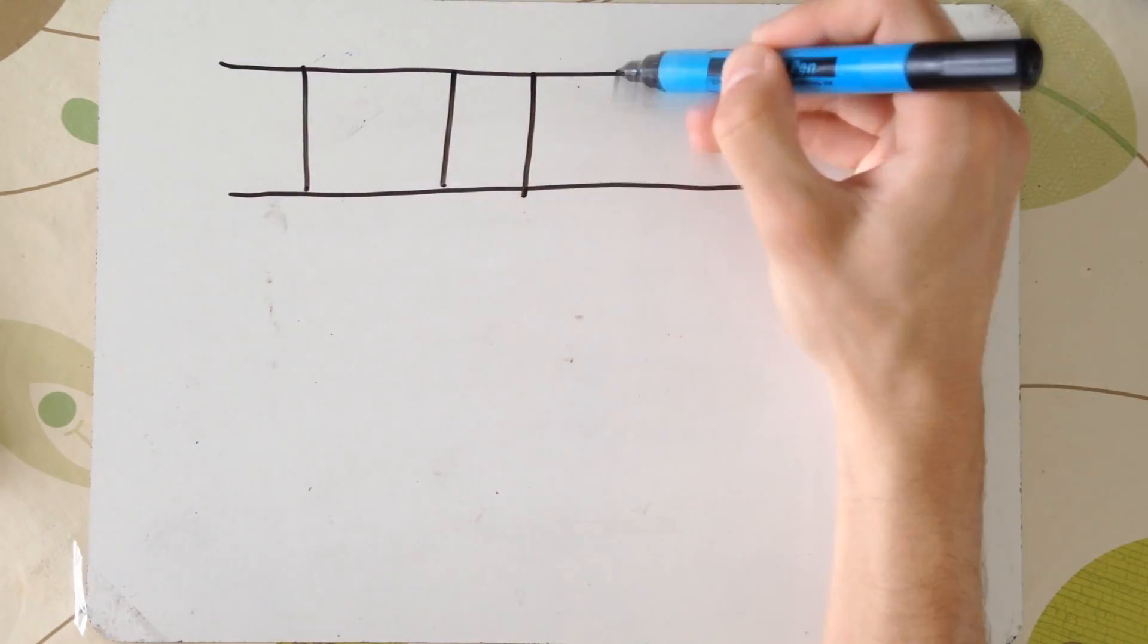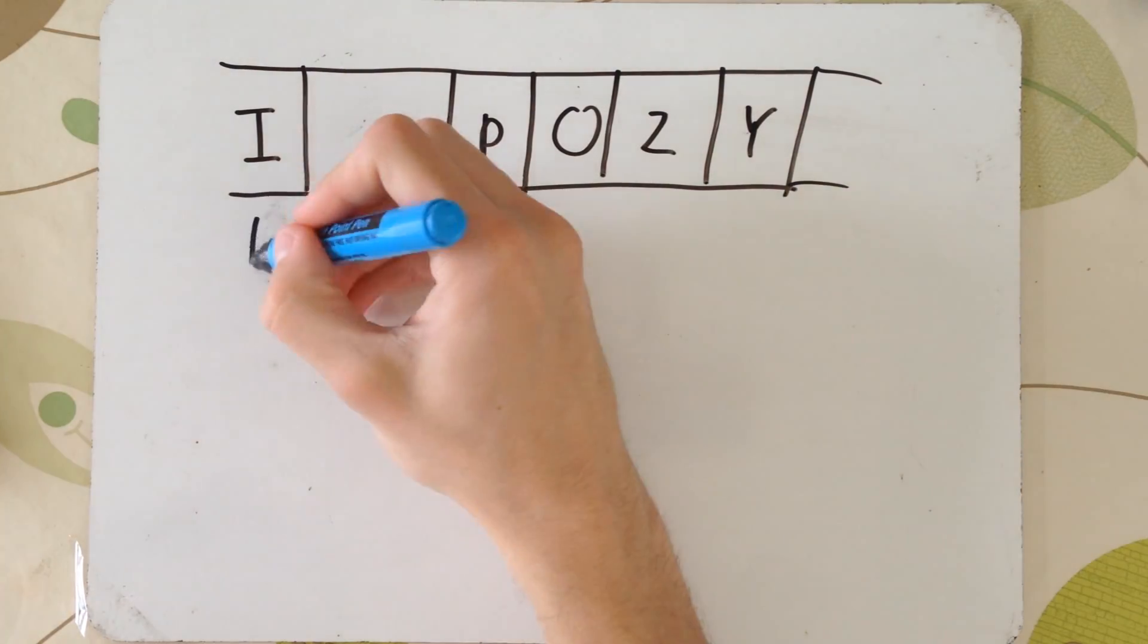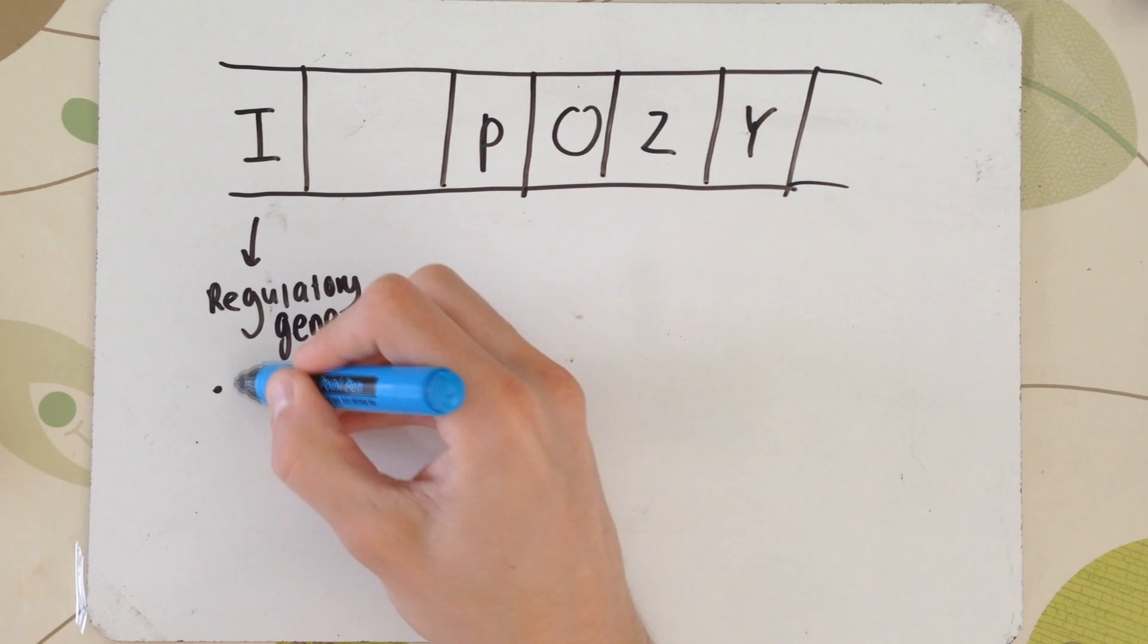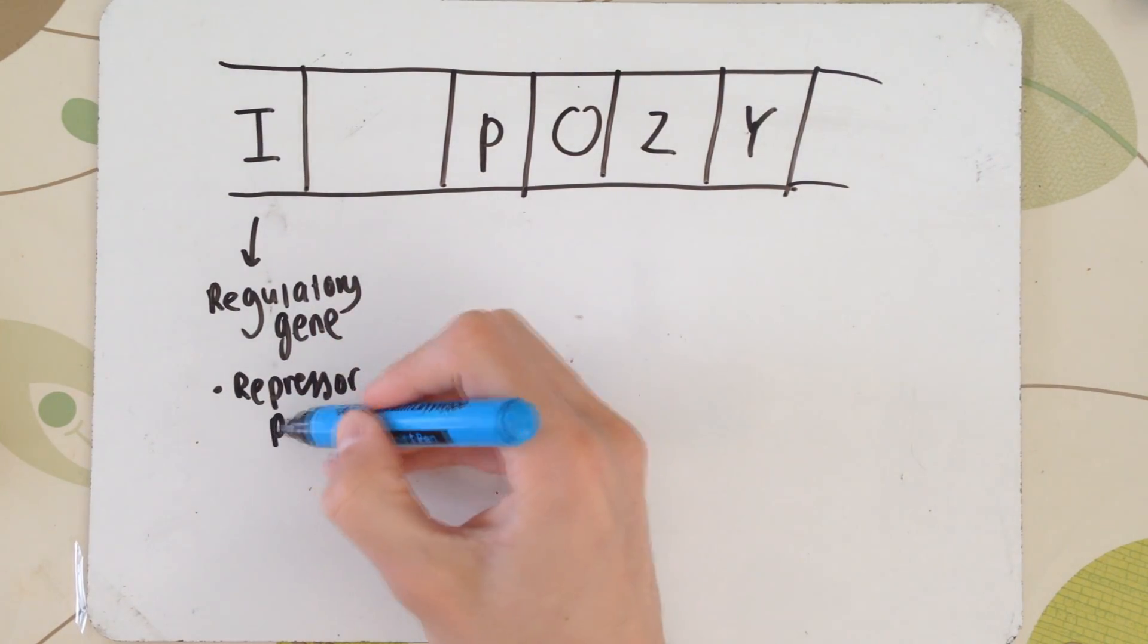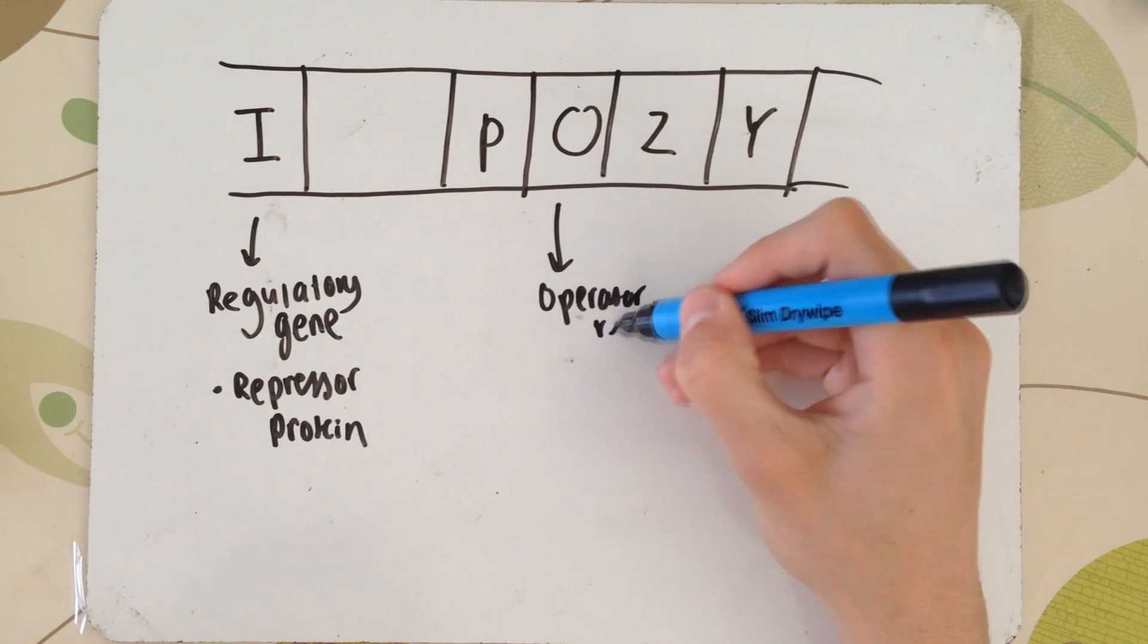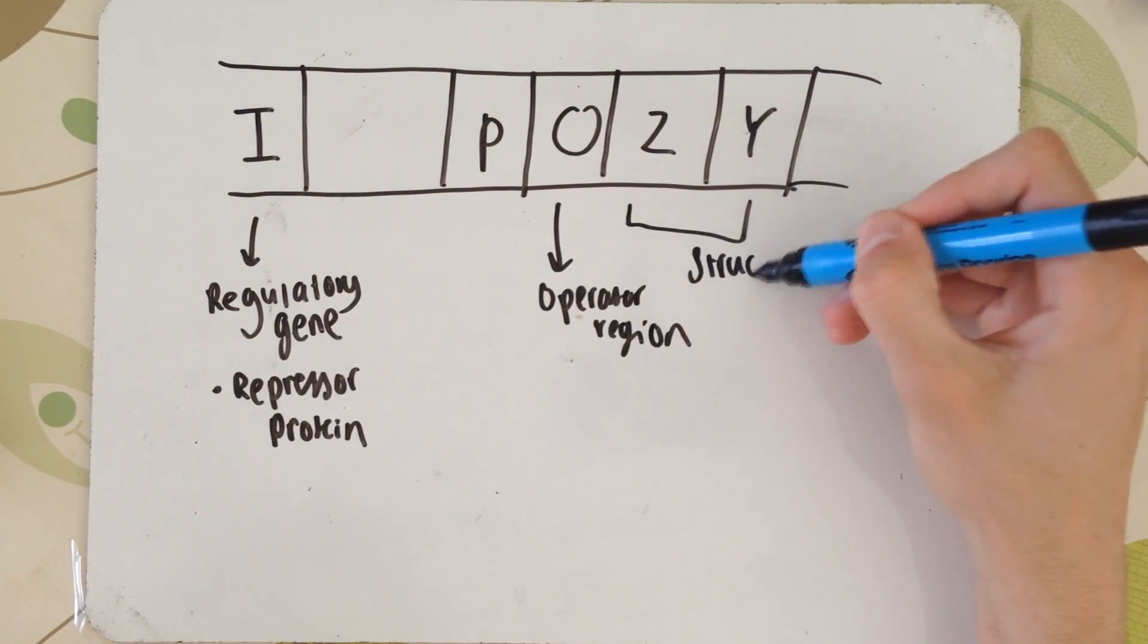So, right now, I'm just drawing out the operon, the lac operon. So, the section of DNA, I, this is your regulatory gene and this creates the repressor protein. O is your operator region and your operator region is always found next to your structural genes, in this case, Z and Y.